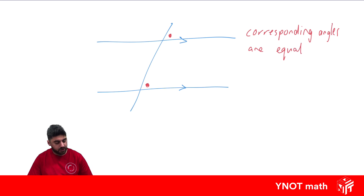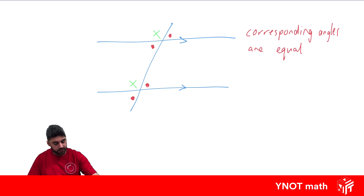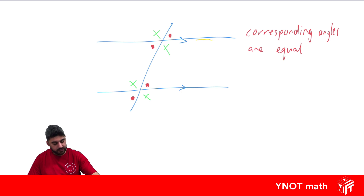There are a lot of sets of corresponding angles. These two angles are also corresponding, these two angles are also corresponding, and these two angles are also corresponding. Corresponding angles are going to make like an F shape. You can see this angle in green is using these two lines, and it's equal to this angle here — it forms like an F shape.